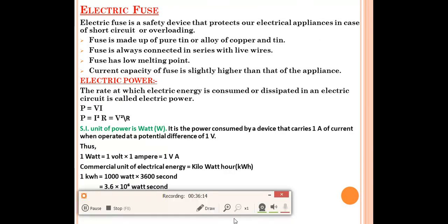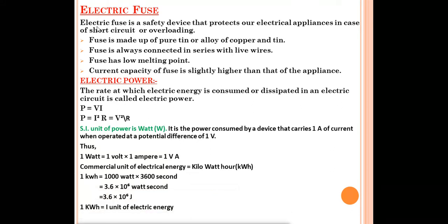Electric fuse is a safety device that protects electrical appliances in case of short circuit or overloading. Fuse is made of pure tin or an alloy of copper and tin. It has a low melting point and is always connected in series with the live wire. If overloading or short circuit occurs, the fuse melts and breaks, cutting off the power and protecting the appliances.